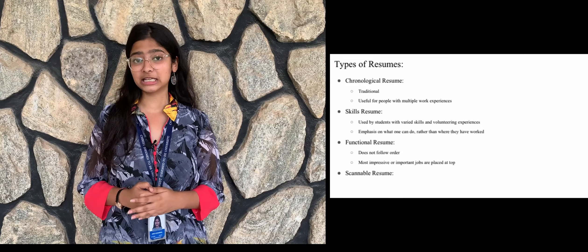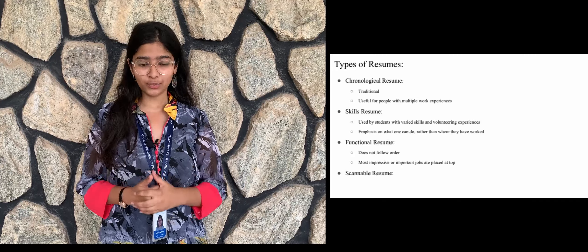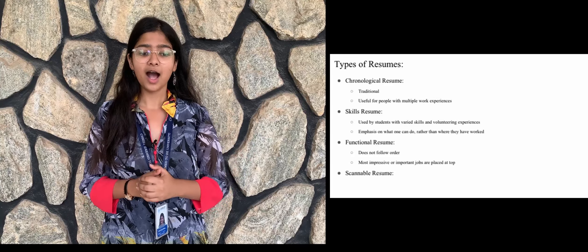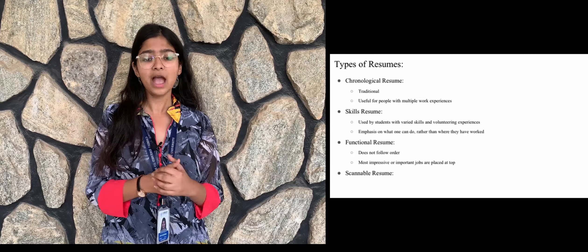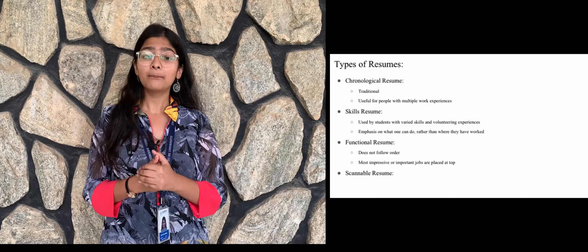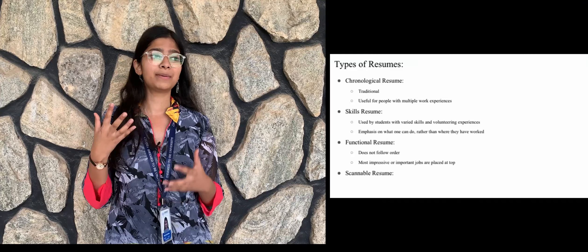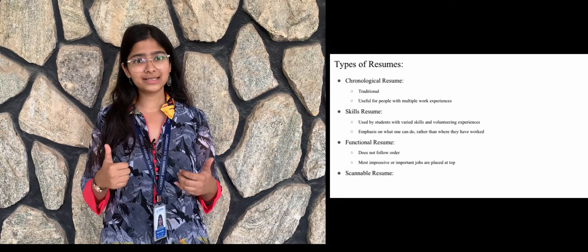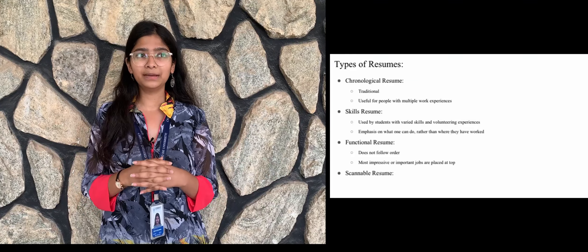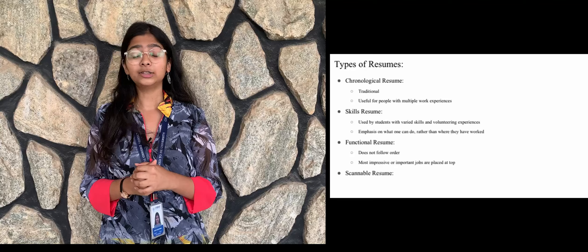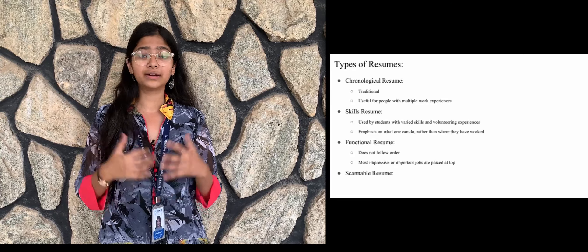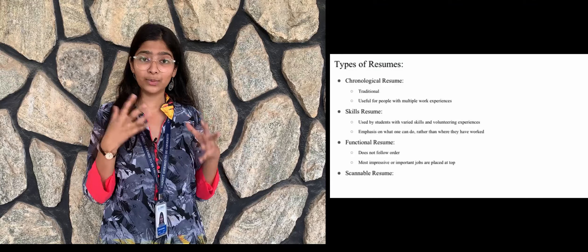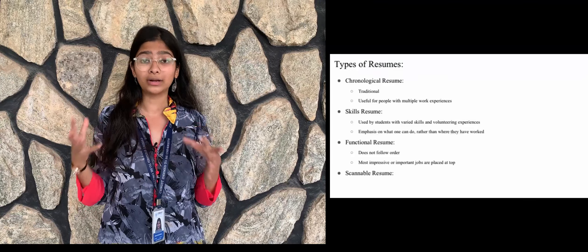Talking about the types of resumes, there are basically four: chronological resume, skills resume, functional resume, and scannable resumes. A chronological resume is a traditional type, useful for people with multiple work experiences. A skills resume is mostly used by students to display their volunteering experiences and what they have worked upon. A functional resume does not follow a particular order — the most impressive achievements can be placed at the very top. Scannable resumes are automatically scanned by systems that pick up keywords and shortlist your resume among many others.